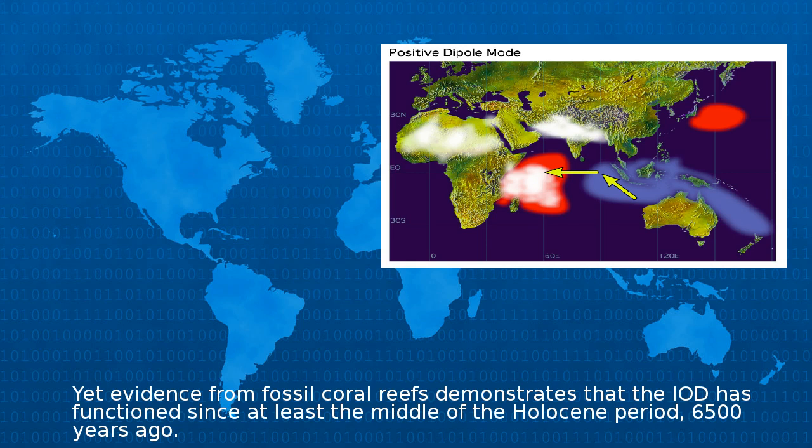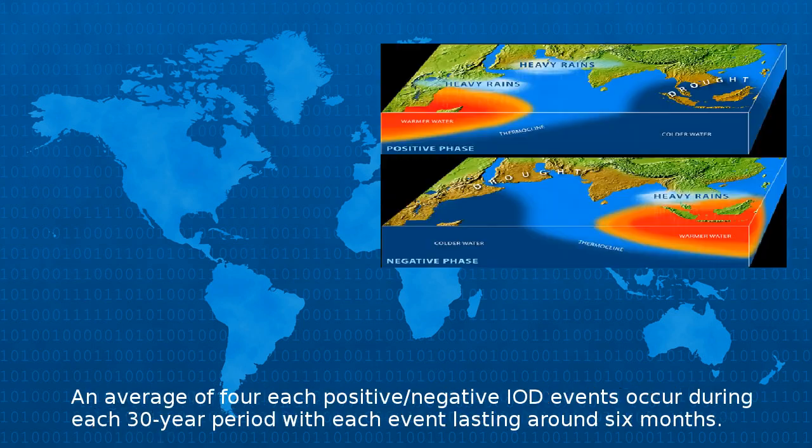Yet evidence from fossil coral reefs demonstrates that the IOD has functioned since at least the middle of the Holocene period, 6,500 years ago. An average of 4 each positive and negative IOD events occur during each 30-year period, with each event lasting around 6 months.